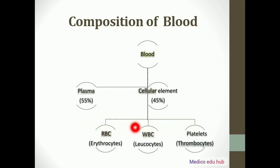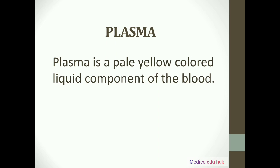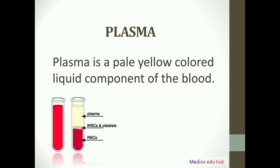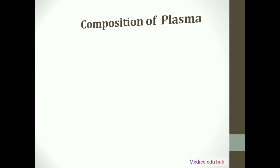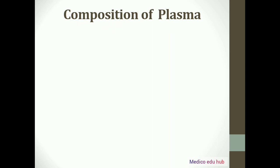Blood plasma is a pale yellow colored liquid component of blood. So plasma is a yellow colored liquid component of blood. In this slide, we will see the composition of plasma.